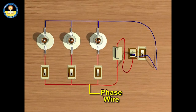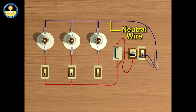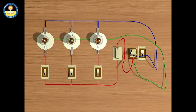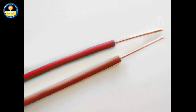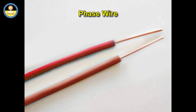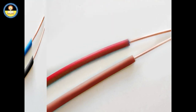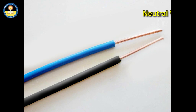When an object is rubbed with the surface of another, some electrons get transferred from one body to another. The body that gains electrons becomes negatively charged and the one that loses electrons becomes positively charged. This process of charging is called charging by friction. For example, a rubber balloon rubbed with a woolen garment becomes positively charged, while the woolen garment is left with a negative charge because electrons are transferred from the balloon to the garment.